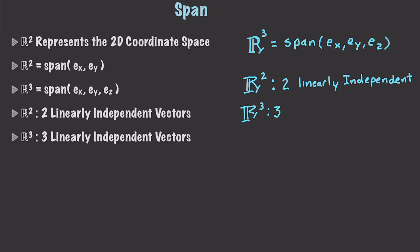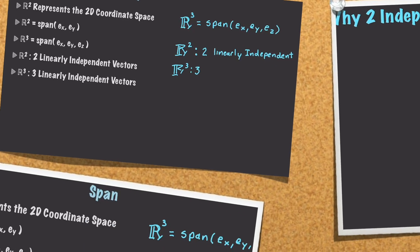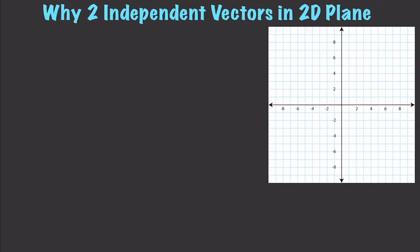And by linearly independent, all we are saying is that a vector that points in a different direction from the other vectors that we are referencing. Kind of might be confusing, so why don't I just jump in here and show you some examples to clear it up. Okay, so there may be a question of why two independent vectors on a 2D plane. I'm going to explain it to you very easily.